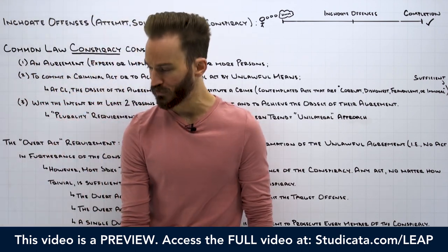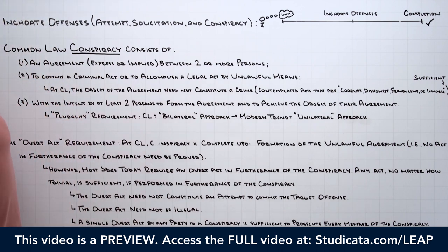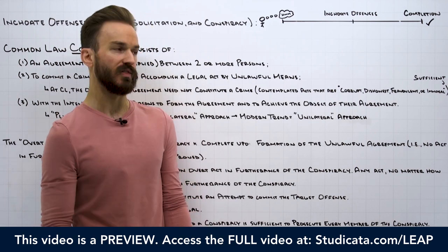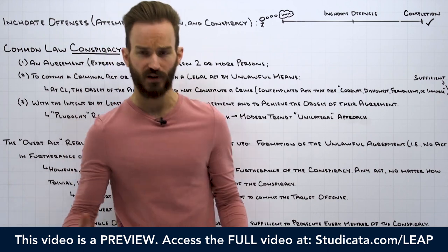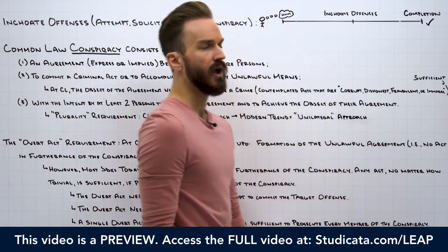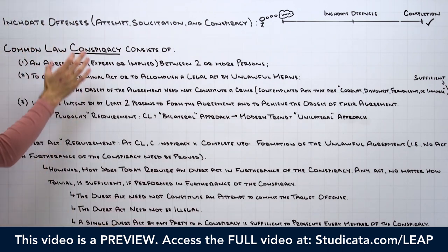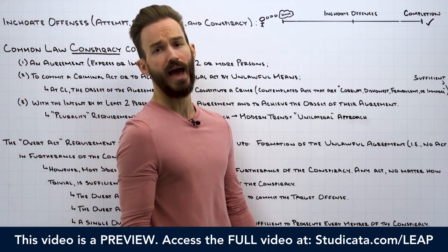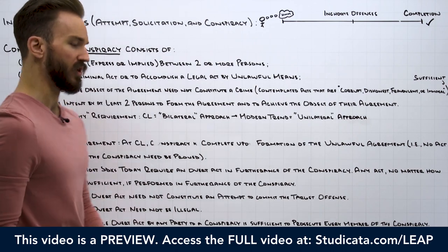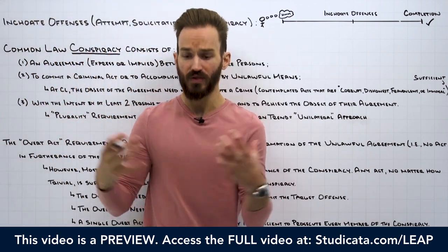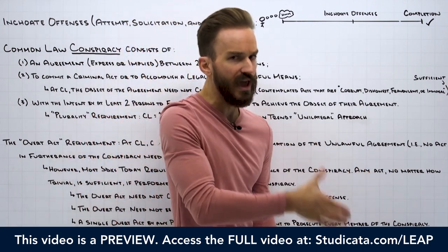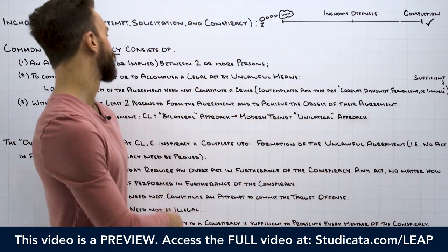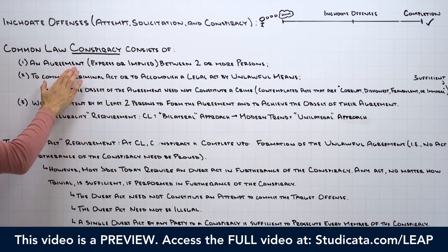The agreement can be expressed or implied. If we see in the fact pattern that two people are sitting in a room and one says, 'Do you want to help me kill my spouse?' and the other says 'yes' and they start hatching a plan and shake hands — at that moment, at common law, we have a conspiracy. When that express agreement between two or more people to commit a criminal act with the proper intent occurs, at that moment in time, we have a conspiracy to commit murder.